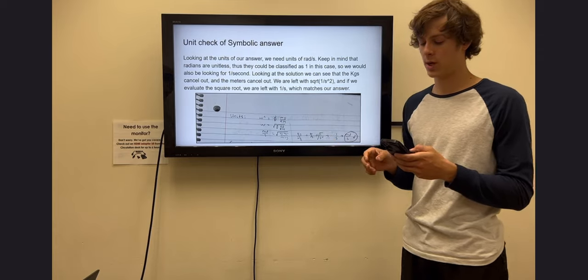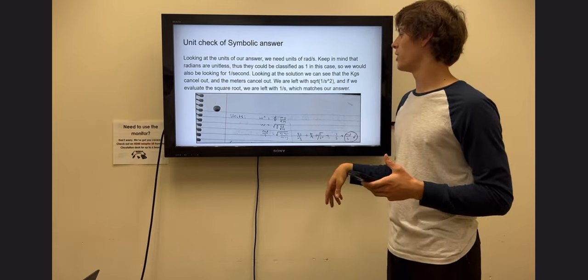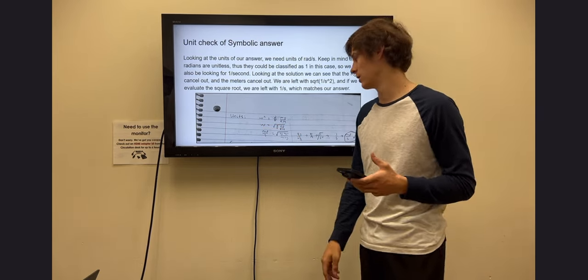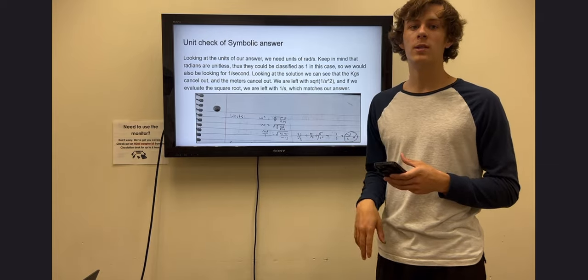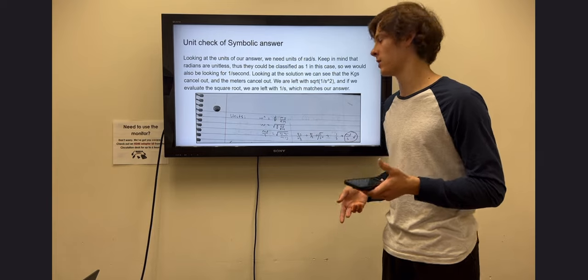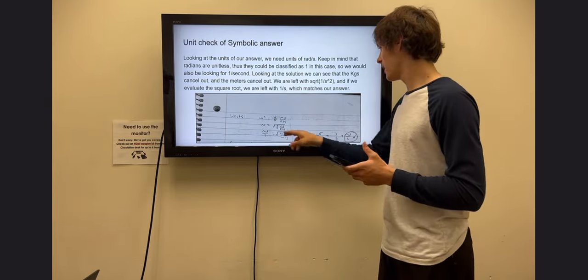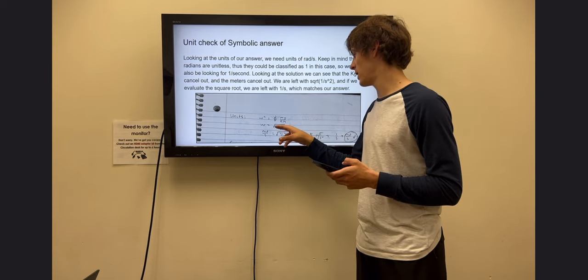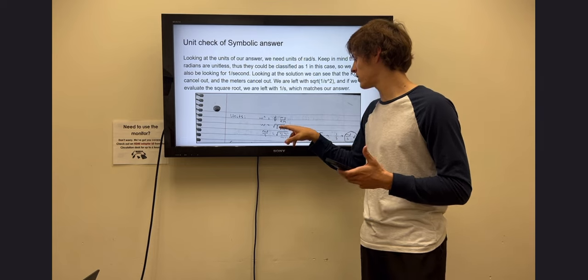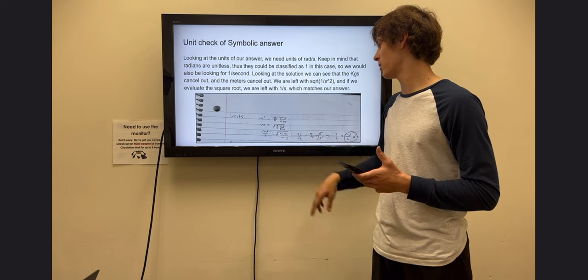Now let's go over the units to make sure our answer is correct. The units of angular speed are radians per second. Keep in mind that radians do not have units, so it can be equivalent to one over seconds. Going into the units of our answer: two-fifths is a scalar with no units, and then little mass times gravity over the radius of the table times the mass of the block.